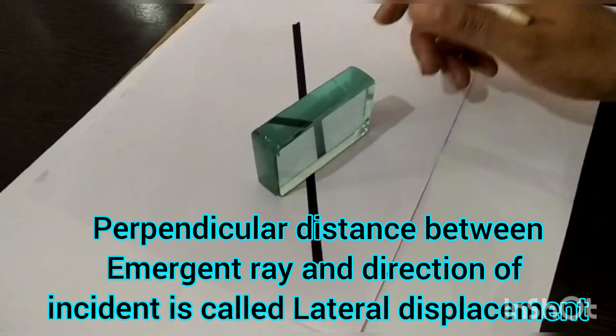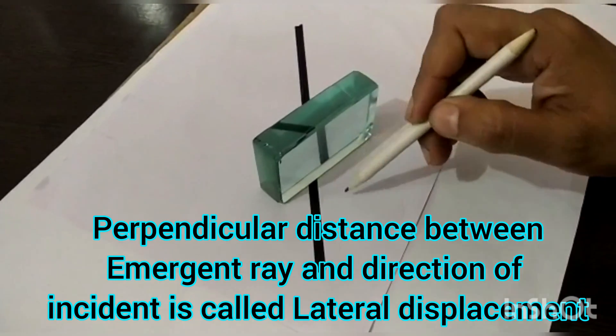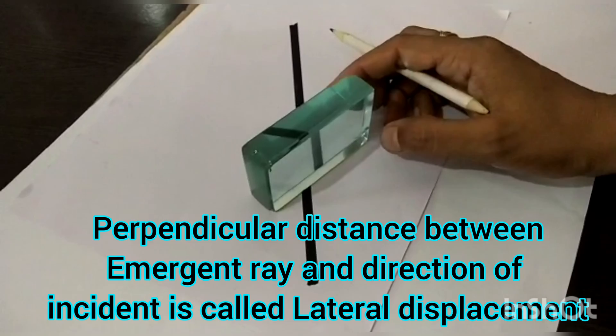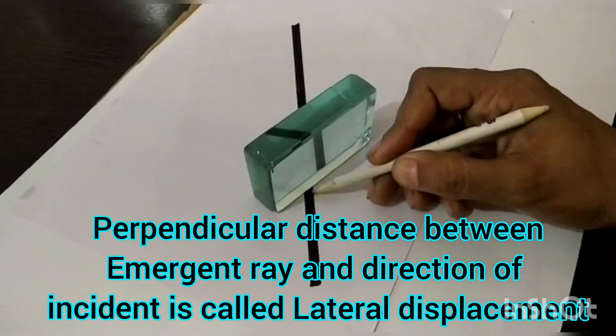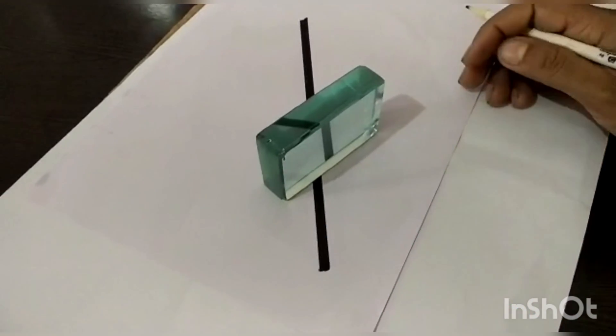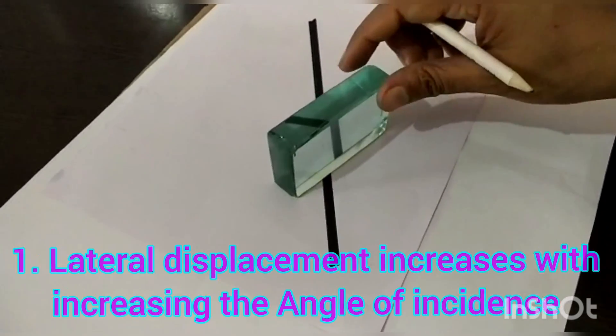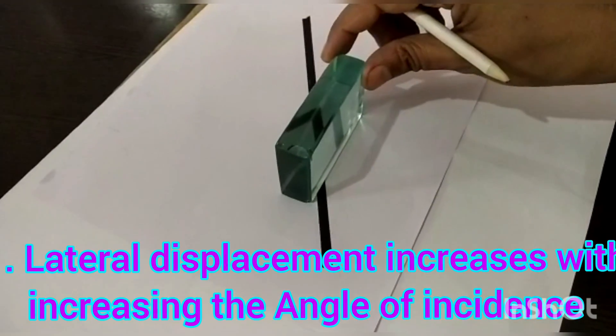The incident ray and refracted ray here to come out, these two are parallel, and this parallel distance between the two is called lateral displacement, and it is increasing if I increase the angle of incidence.